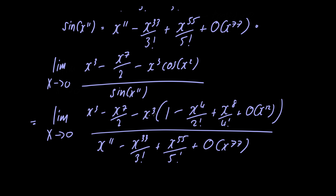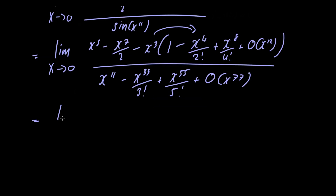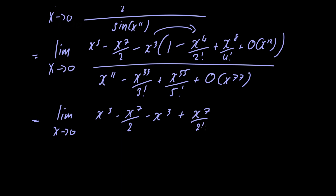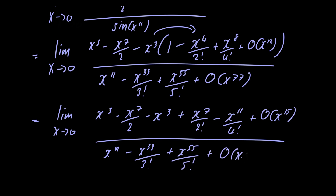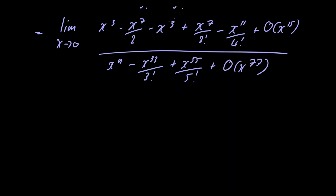Now let's tidy this up by distributing minus x cubed to everything inside the brackets. We get the limit as x goes to 0 of x cubed minus x to the 7th power, divided by 2 minus x cubed, plus x to the 7th power divided by 2, minus x to the 11th power divided by 4 factorial, plus O of x to the 17th power. Now x cubed minus x cubed gives us 0, so we're left with minus x to the 11th power divided by 4 factorial, plus O of x to the 15th power in the numerator.